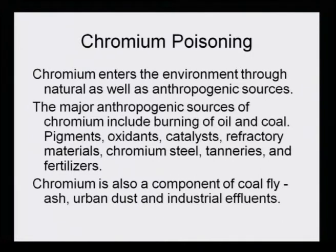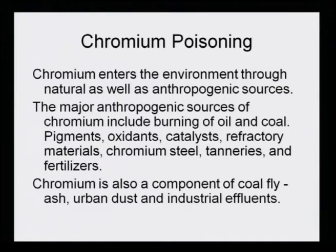Chromium poisoning — chromium poisoning has caused a lot of devastation in tannery areas. Chromium enters the environment through natural as well as anthropogenic sources. The major anthropogenic sources of chromium include burning of oil and coal, pigments, oxidants, catalysts, refractory materials, chromium steel, tanneries and fertilizers. We are responsible for it because we have not taken care of the waste, and that has caused chromium poisoning.